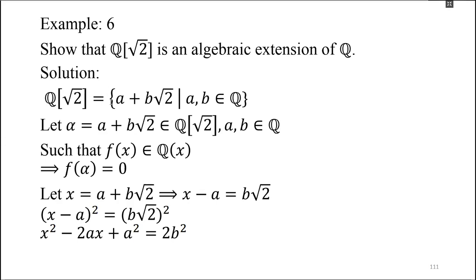We have to know that Q(√2) = {a + b√2} where a, b are rational. We pick an element α from your extension field. If we pick α = a + b√2 and put its value into a polynomial from the subfield, and the result is 0, you will say it's Algebraic. Squaring both sides: x − a = b√2, so x² − 2ax + a² = 2b², giving x² − 2ax + (a² − 2b²) = 0.